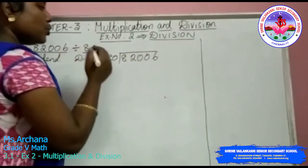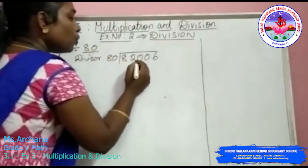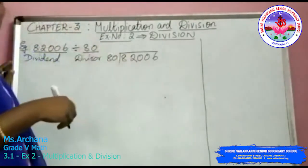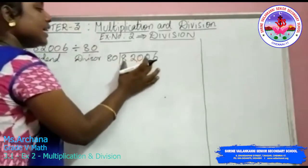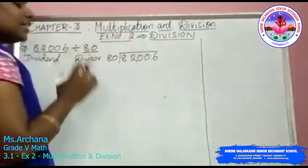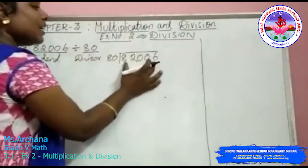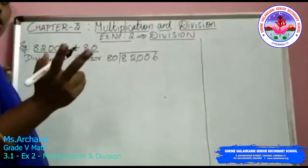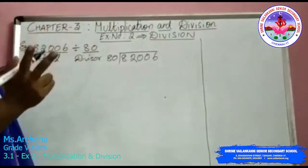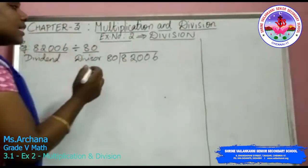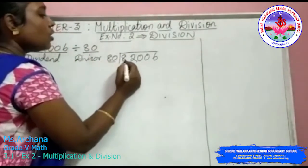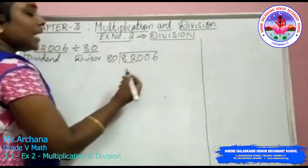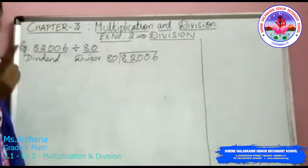So always you are supposed to take 2 digits from the inside of the division column, which is the dividend. From the dividend, you should consider 2 numbers — 2-digit numbers. Because the divisor is 2 digits, so the first number you are going to take is a 2-digit number.